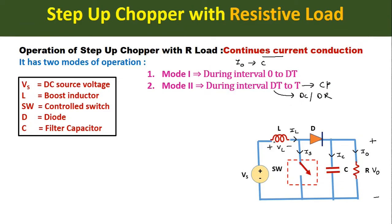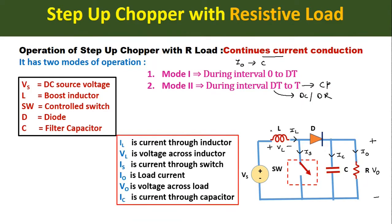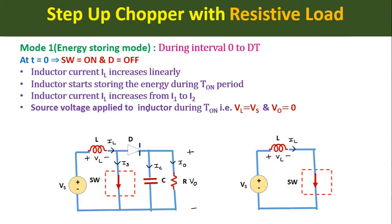This is the circuit diagram of the step-up chopper or boost converter, where the SCR has been replaced with a switch SW. The DC source voltage is Vs, L is the boost inductor, D is a diode, and C is the filter capacitor. The inductor current is iL, the voltage across the inductor is VL, the switch current is iS, the load current is iO, the output voltage is Vo, and the capacitor current is iC.